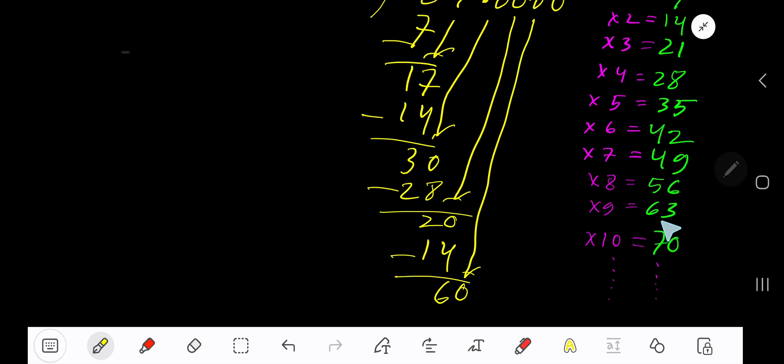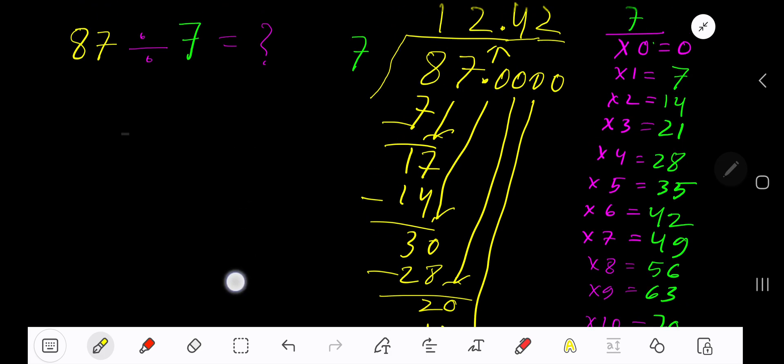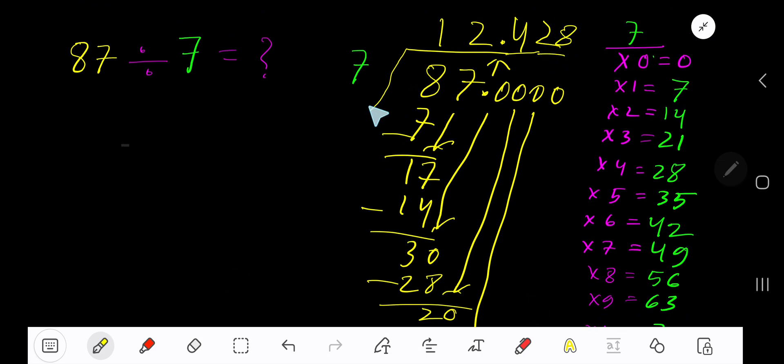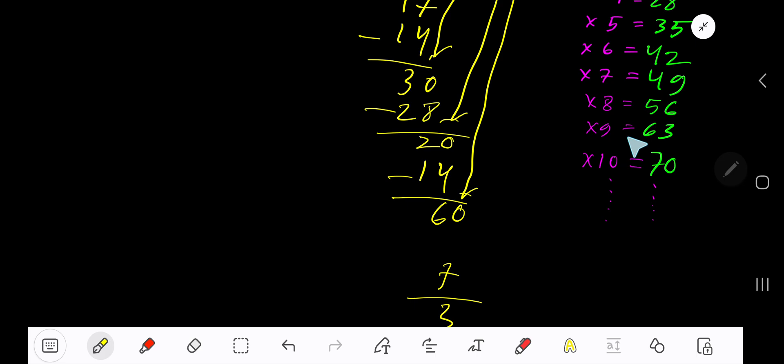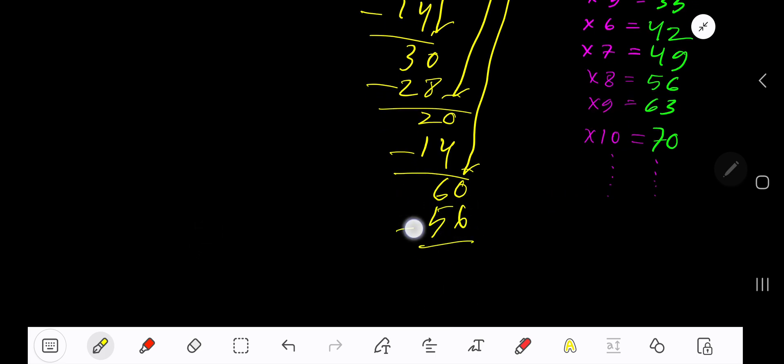8 times 7 is 56. If you subtract, you are getting 4.